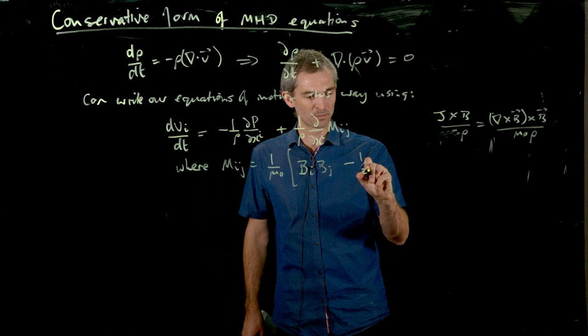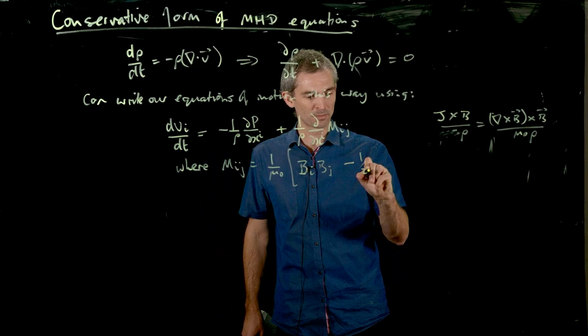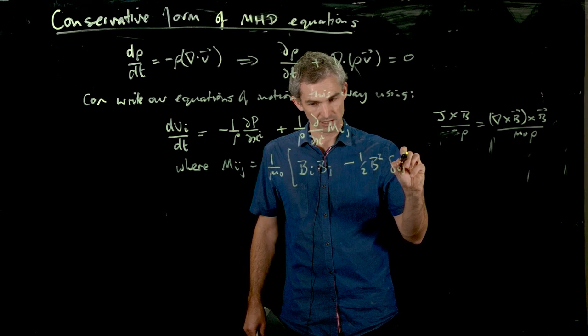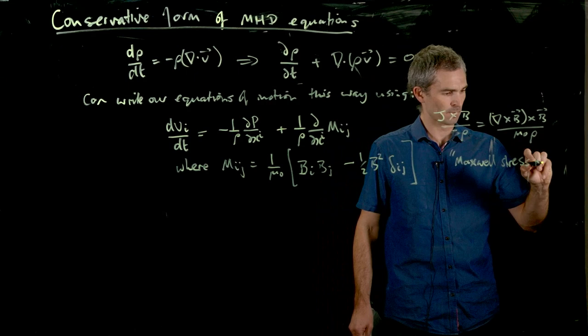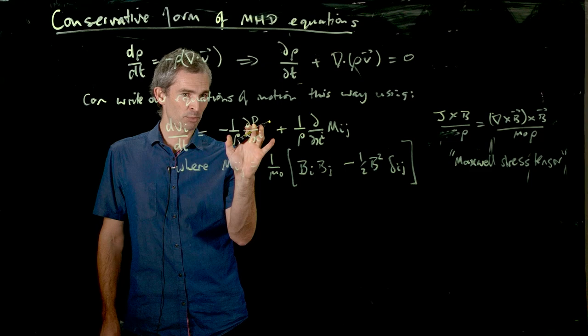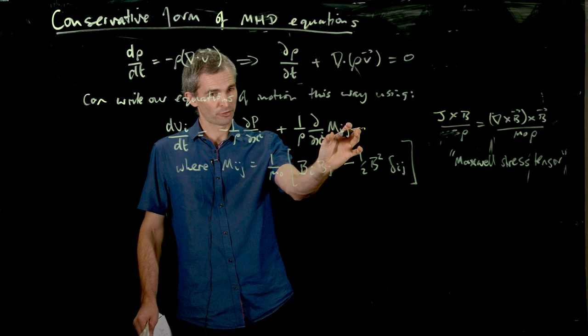It's a b b, if you like. And it's a minus the diagonal term, which is the half b squared Kronecker delta. So that's like just along the diagonals. And so this is the Maxwell stress tensor. So again, this is what I sort of mentioned earlier in the course. We're going to generalize our pressure, which is just a scalar in the case of hydrodynamics to a kind of stress tensor. And that's what we get in the equations of MHD.